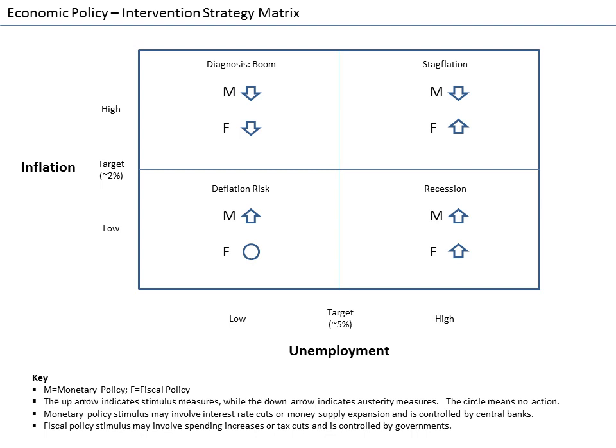They also develop models that explain the relationship between such factors as national income, output, consumption, unemployment, inflation, savings, investment, international trade, and international finance. There are two areas of research emblematic of the discipline: the attempt to understand the causes and consequences of short-run fluctuations in national income, and the attempt to understand the determinants of long-run economic growth. Macroeconomic models and their forecasts are used by governments to assist in the development and evaluation of economic policy.